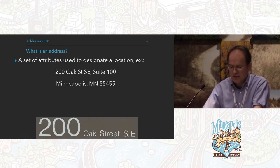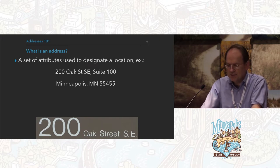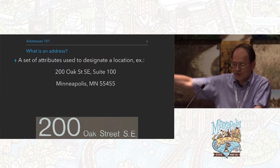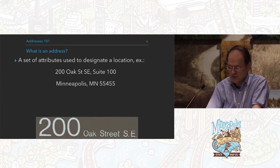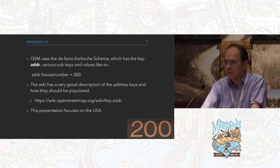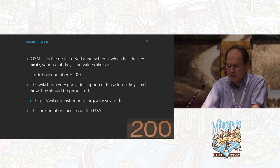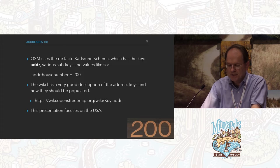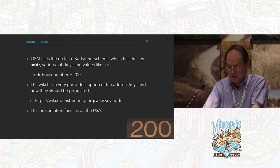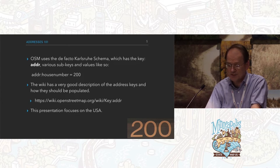Some basics. What is an address? It's attributes used to designate a location. We're pretty much at 200 Oak Street, Southeast, Suite 100, Minneapolis, Minnesota, 55455. OSM uses the de facto Karlsruhe schema, which is the key addr and various subkeys. The wiki is really the place to go to find out more information on how they want things done. This presentation is entirely U.S.-focused, so Costa Rica, sorry.